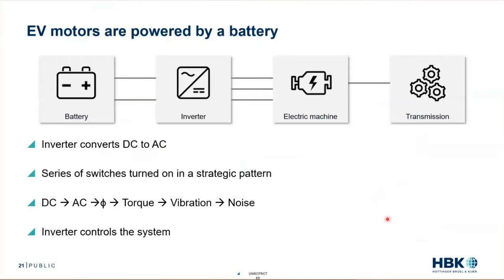That's the path: DC current gets chopped up by switches turning on and off into high-frequency voltage, to high-frequency current, to magnetics, to torque, to noise, to vibration. The inverter is the conductor of the orchestra — it says when to turn voltage on and off, when to create magnets, when to create torque. We have a computer telling this inverter what to do, and that's what we mean when we refer to it as a control.